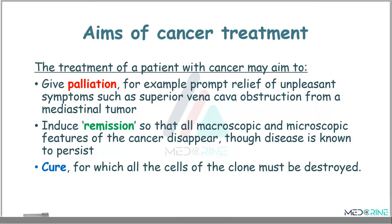When treating cancer, we do it with three different aims. We aim to give palliation — for example, provide prompt relief of unpleasant symptoms such as superior vena caval obstruction from mediastinal tumors. The second aim is to induce remission so that all macroscopic and microscopic features of the cancer disappear, although the disease is known to be persistent. And lastly, we aim to provide cure, for which all the cells of the clone must be destroyed.